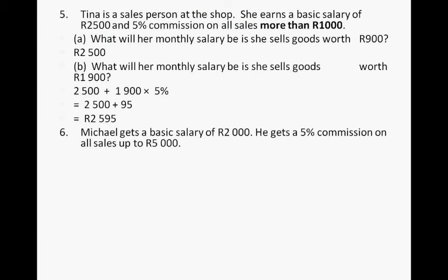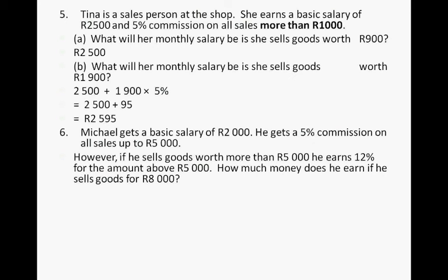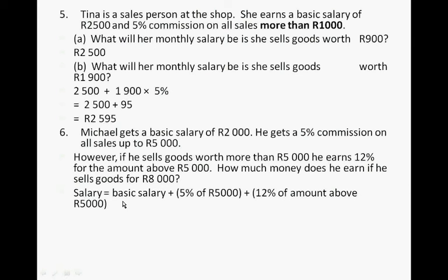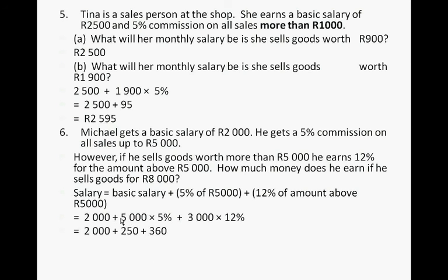Michael gets a basic salary of $2,000,000. He gets 5% commission on all sales up to $5,000,000, and 12% on the amount above $5,000,000. If he sells $8,000,000 worth of goods, it's his basic salary plus 5% of $5,000,000 plus 12% of $3,000,000 (the amount above $5,000,000). 5% of $5,000,000 is $250,000, and 12% of $3,000,000 is $360,000. Add those together and he earns $2,610,000.